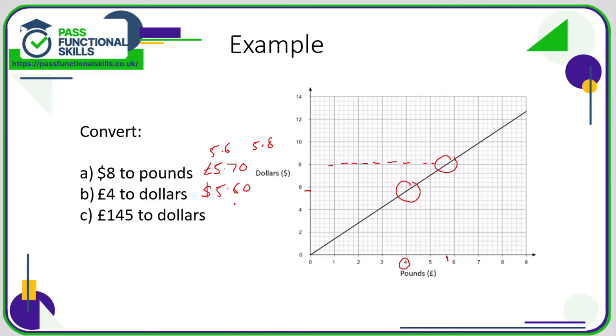If we want to convert 145 pounds into dollars, that's going to be very difficult because it's completely off the scale. But if I know that four pounds is equivalent to five dollars sixty, I need to work out what I'm going to get for 145 pounds. The problem is I don't know how many times greater 145 is than four.